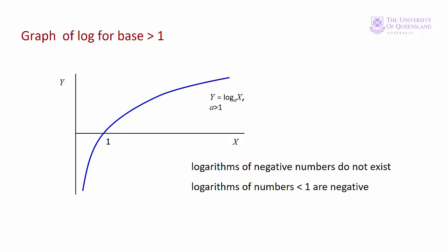The graph of a log for a base greater than 1 is like this. For x less than 1, the log is negative. We have 0 there. For x greater than 1, the log is positive. The log of 1 for any base is always 0. Note that logs for negative numbers don't exist. So the domain for our function is 0 to infinity and the range from minus infinity to plus infinity.